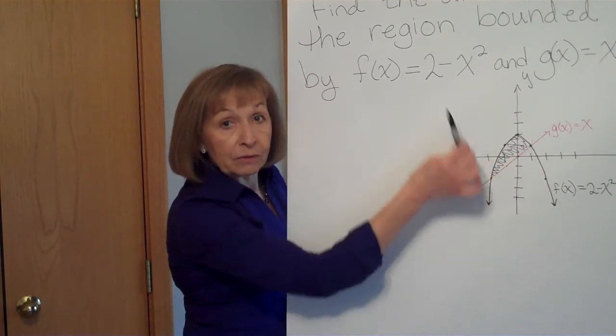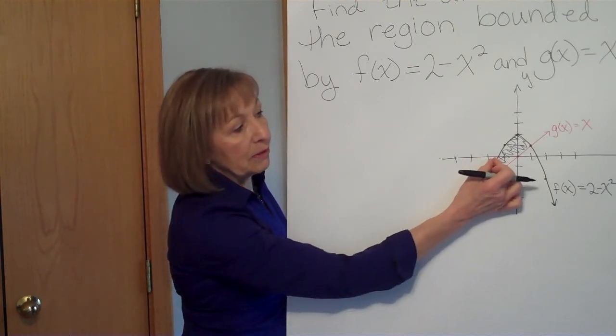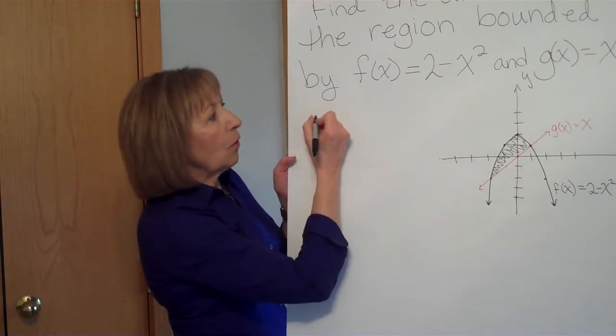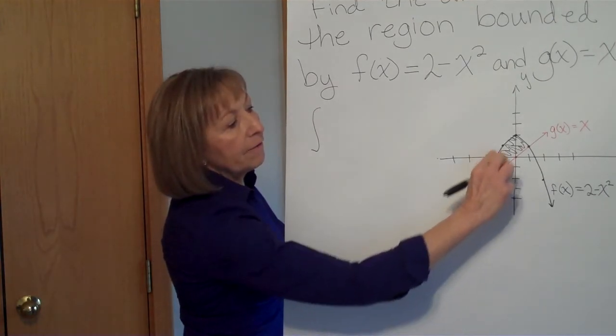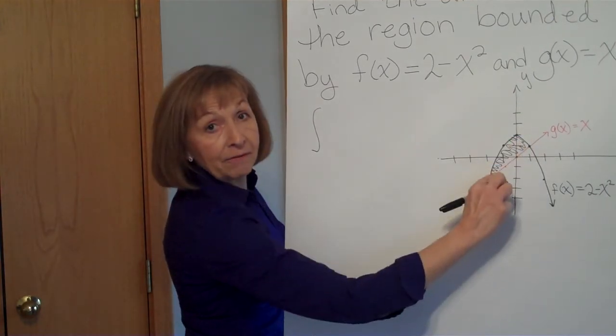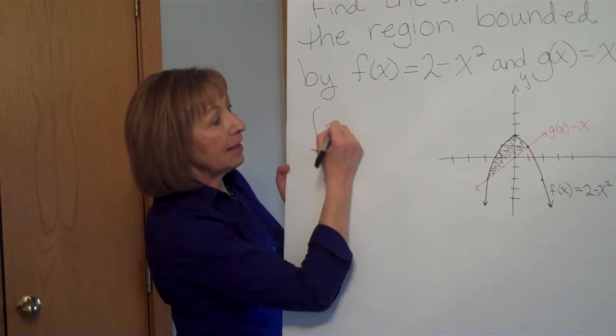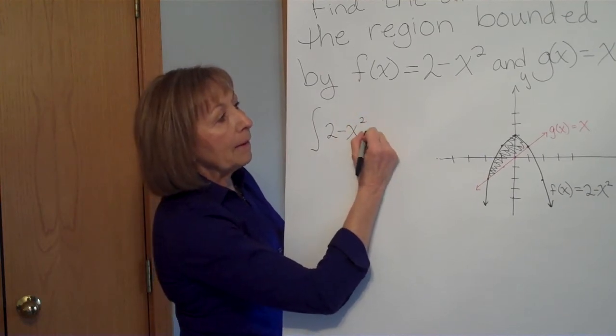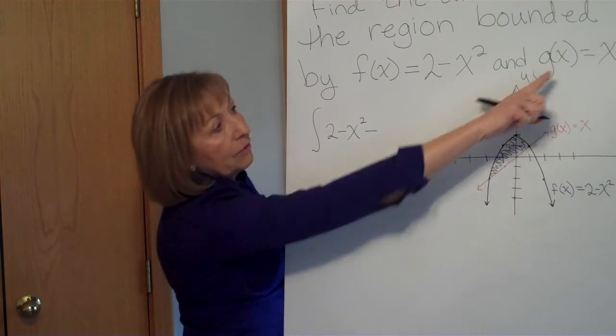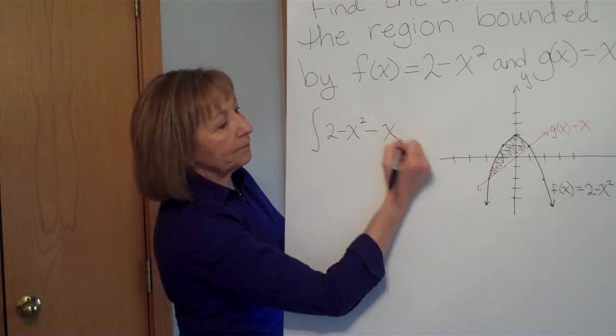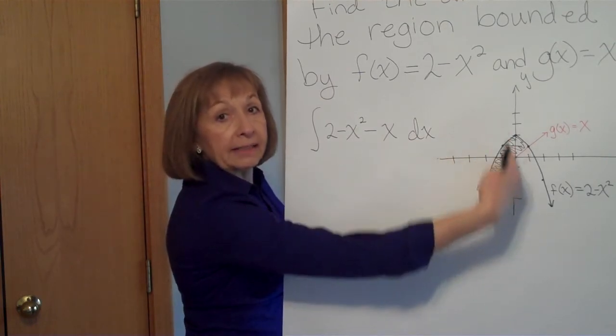Now my sub rectangles being tall and thin mean that I'm doing dx, the differentials with respect to the x variable. So our region is going to be the definite integral of the function that's on the top of the region throughout the interval. So that's the parabola, that's the 2 minus x squared, minus the function that's on the bottom throughout the region. So that's the function x. And we're dx'ing it because we're holding our sub rectangles vertical.